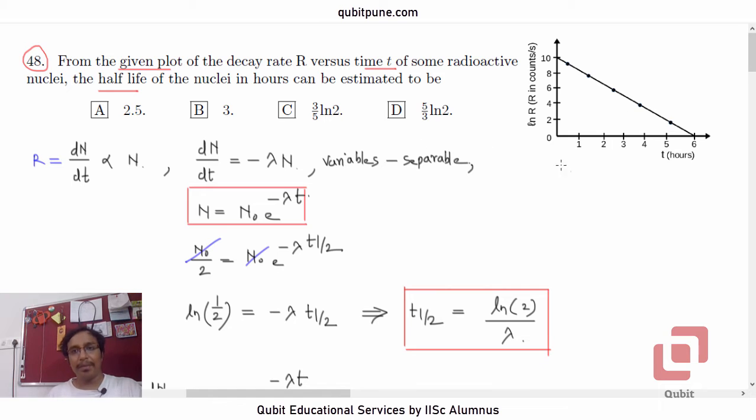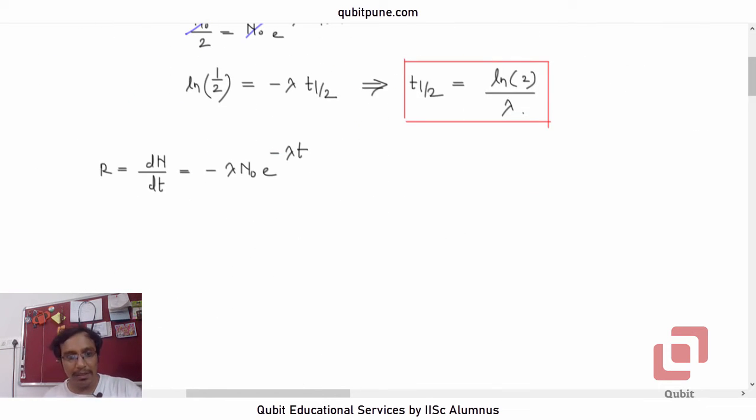Now, there is one thing here. This decay rate is by definition negative. Although they have said that it is in counts per second, if we try to consider the model, then N being a decreasing function of time, its derivative will be negative. So, let's consider negative R here or mod R. Negative R will be lambda N naught e to the power negative lambda t. So this is what they have given us in the problem.